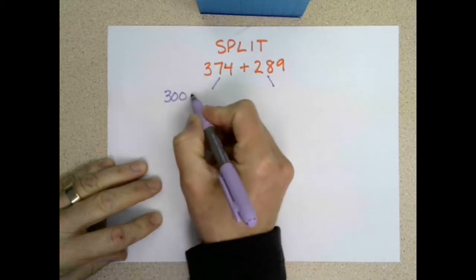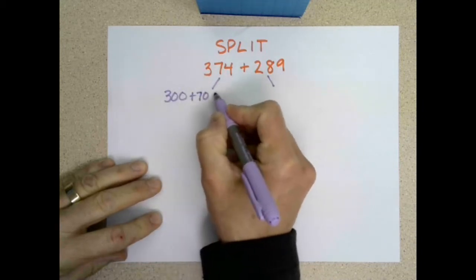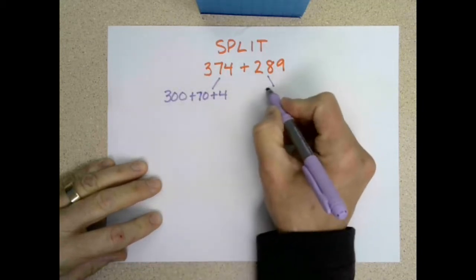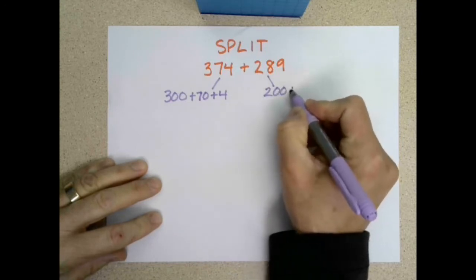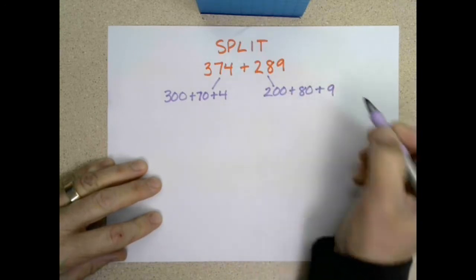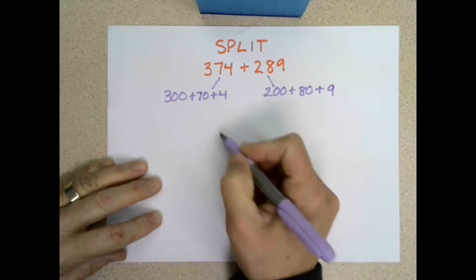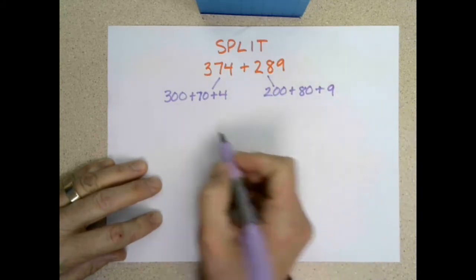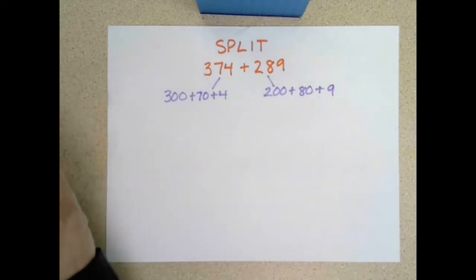So 300 plus 70 plus 4, 200 plus 80 plus 9. Now instead of using arrows to connect all of these, what we're going to do is just write them underneath to the side.